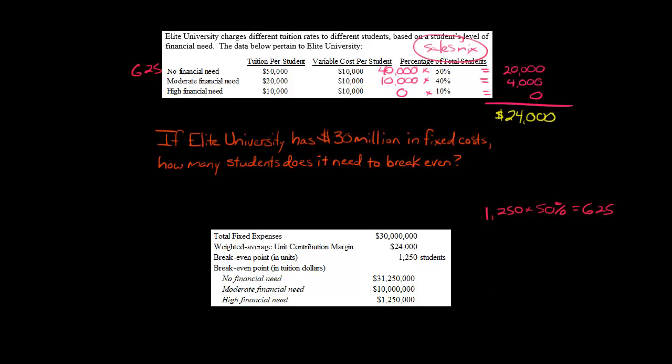So this is the breakout of how much tuition dollars you'd get from each group of students, assuming the sales mix is valid. In total, 1,250 students is the break-even point for this university.